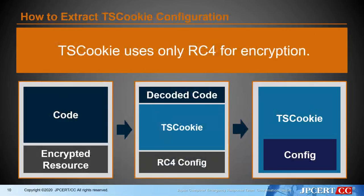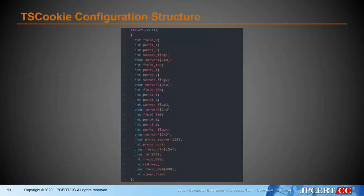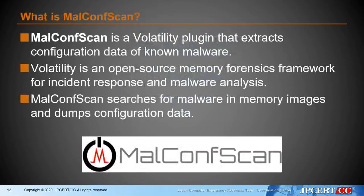Another example is TS-Cookie. TS-Cookie is very simple — it uses only RC4 for encryption, and this pattern has not changed for about 5 years. The size of TS-Cookie configuration data is 0x8D0, which is the same as many other normal malware. So it is difficult to analyze a lot of malware in the same way.